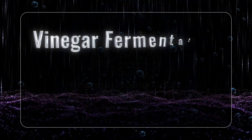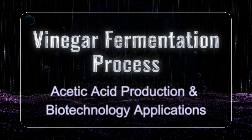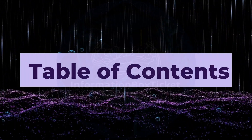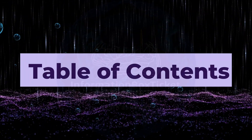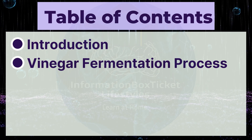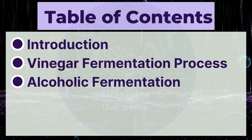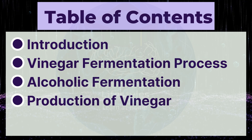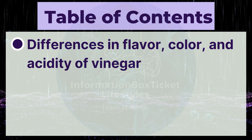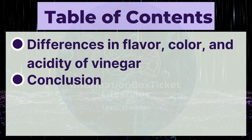Vinegar Fermentation Process: Acetic Acid Production and Biotechnology Applications. Table of Contents: Introduction, Vinegar Fermentation Process, Alcoholic Fermentation, Production of Vinegar, Differences in Flavor, Color, and Acidity of Vinegar, and Conclusion.